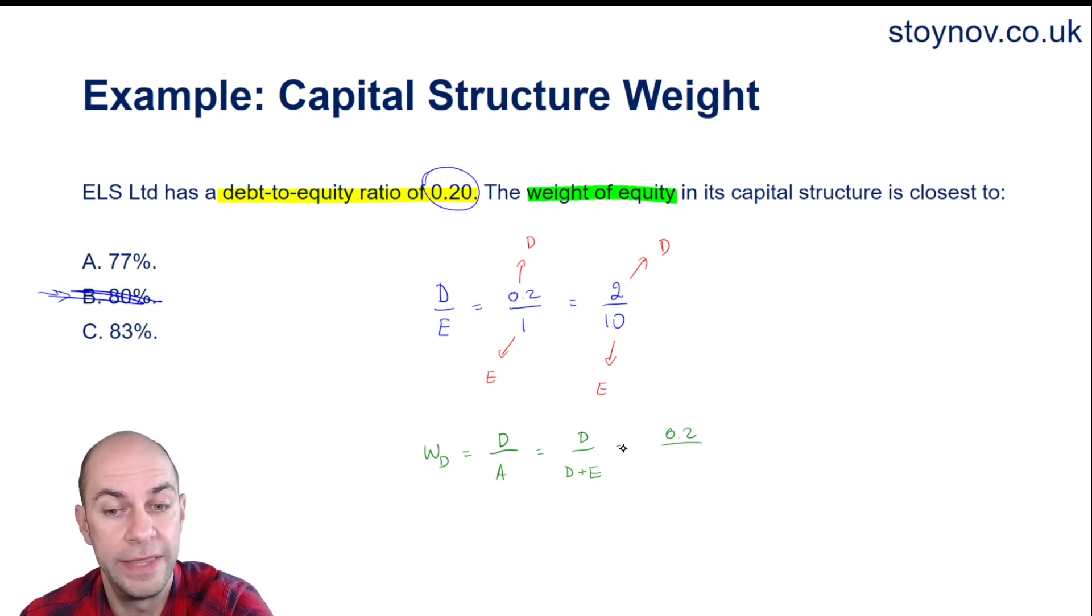we then have 0.2 dollars of debt in the denominator and 1 dollar of equity. So effectively doing 0.2 over 1.2. If you're using the whole numbers for every 2 dollars of debt, I've got 2 dollars of debt and 10 dollars of equity. So here I'm doing 2 over 12. And if I do that,